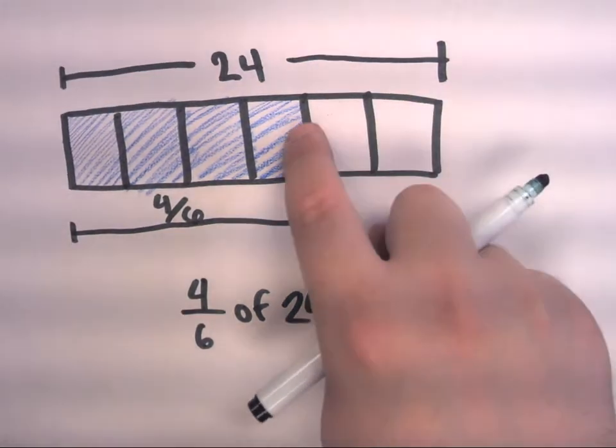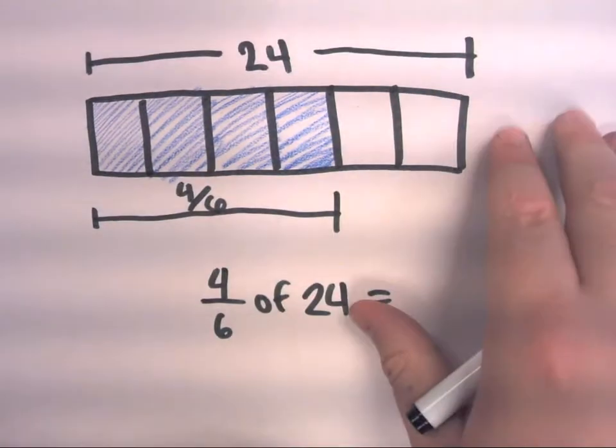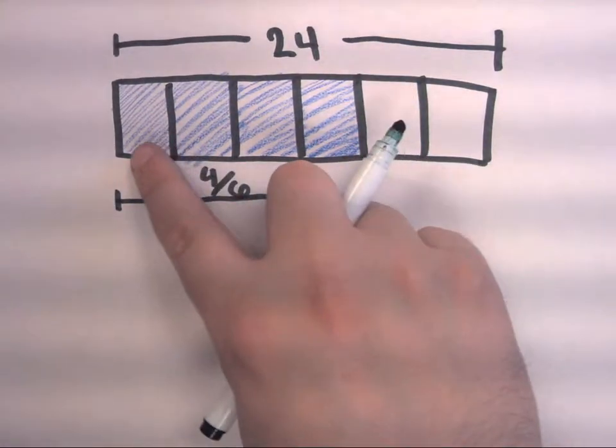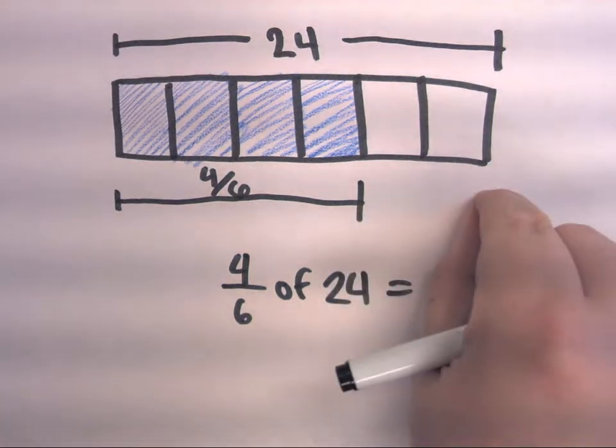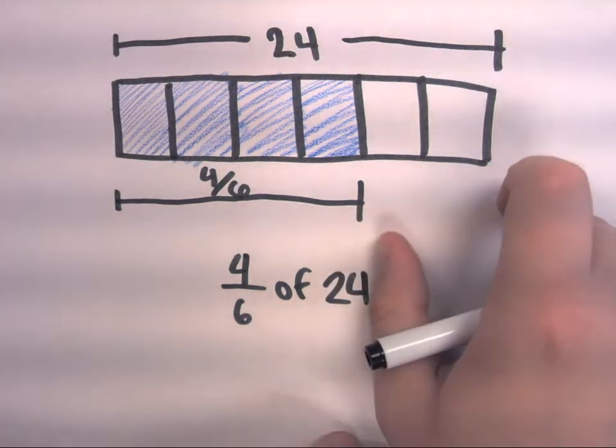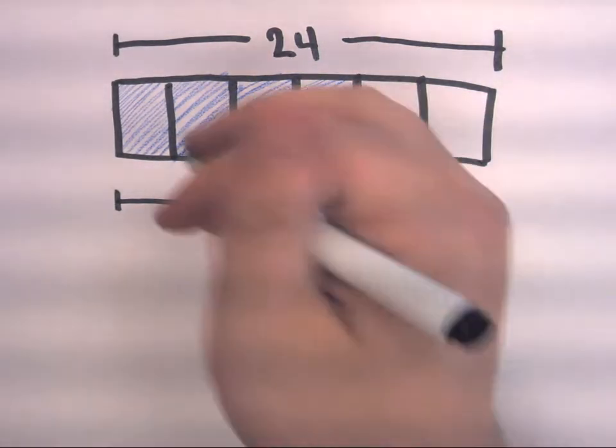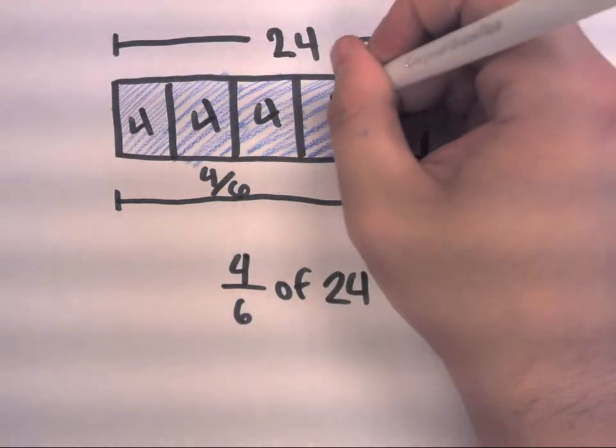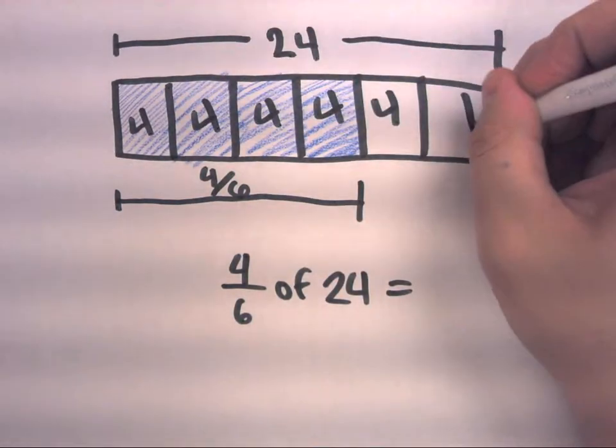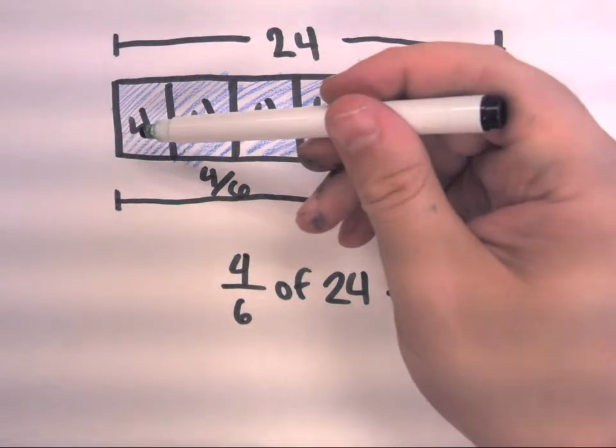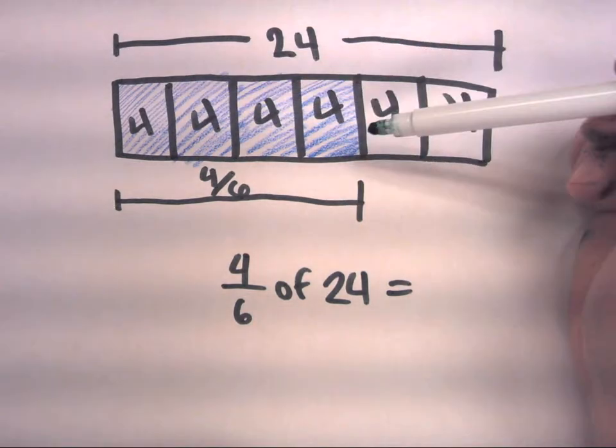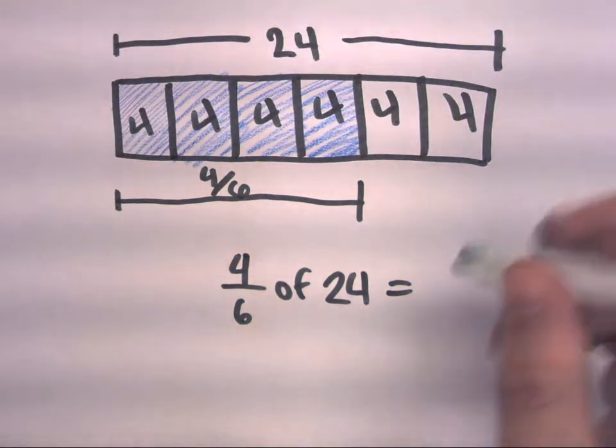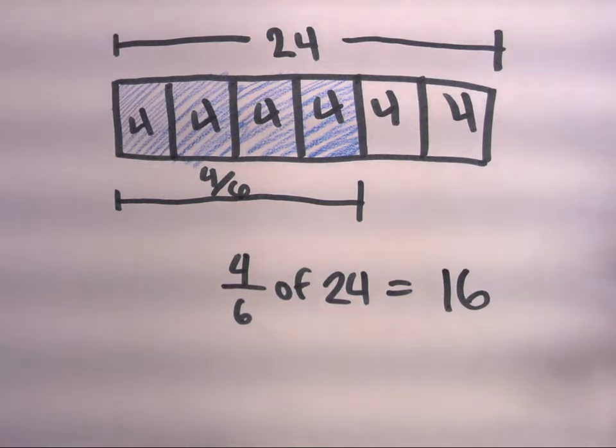So first things first, I need to know what the value of each of these areas is. And since I have 24 total, and I've divided this whole unit 24 into 6 equal areas, 24 divided by 6 is 4. So each of these spaces here represents 4. And since I want to know what 4/6 of this 24 is, I can add up 4 4's together, which is going to give me 16. And that answers the question, what is 4/6 of 24? It equals 16.